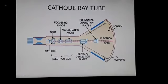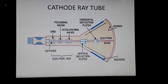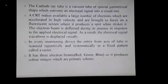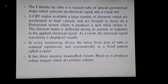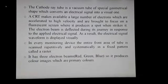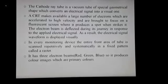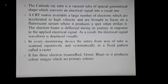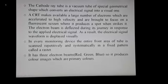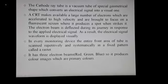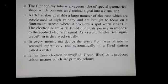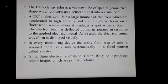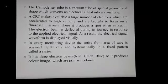This is the visual representation of the cathode ray tube, which is the heart of the CRO. The cathode ray tube is a vacuum tube of specially geometrical shape which converts an electrical signal into a visual one. A CRT makes available a large number of electrons which are accelerated to high velocity and brought to focus on a fluorescent screen where it produces a spot when it strikes. The electron beam is deflected during its journey in response to the applied electrical signal, and as a result the electrical signal waveform is displayed visually.